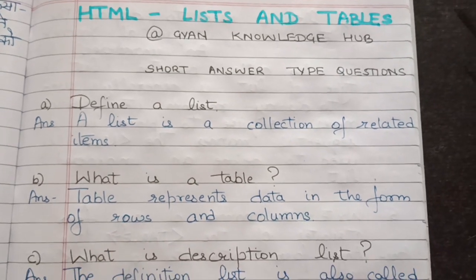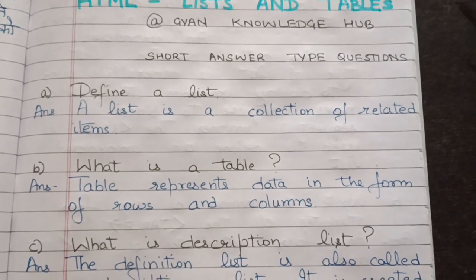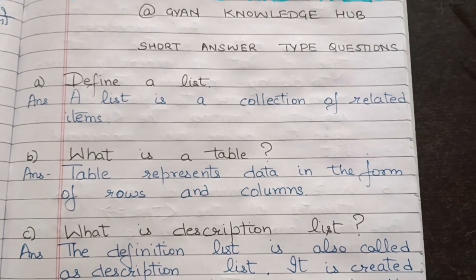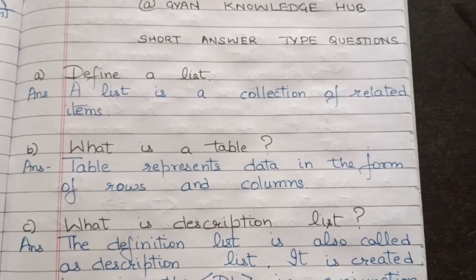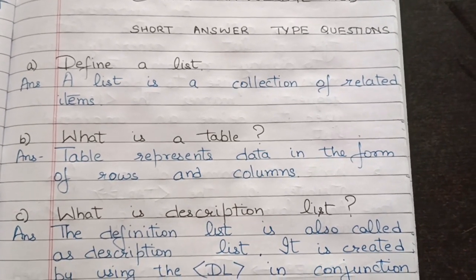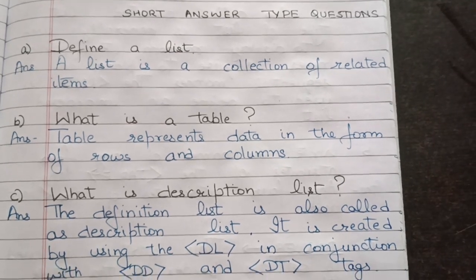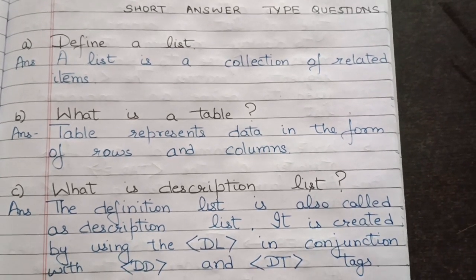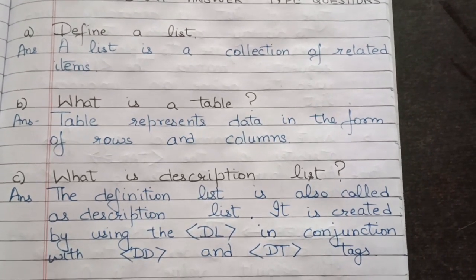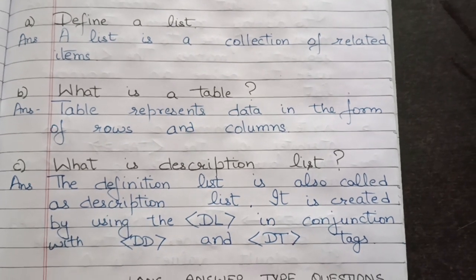Next is: what is a description list? The definition list is also called a description list. It is created by using the dl tag in conjunction with the dd tag and dt tags.